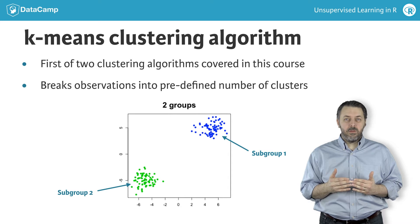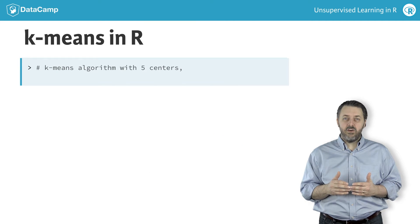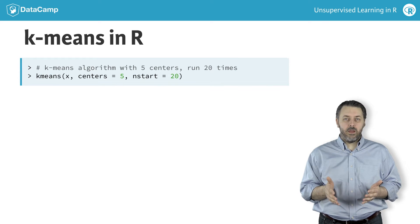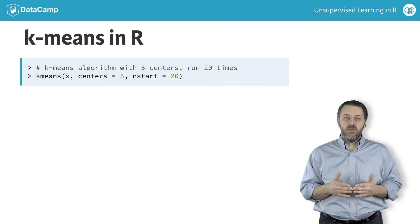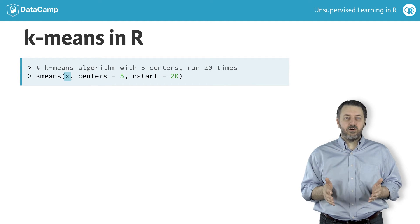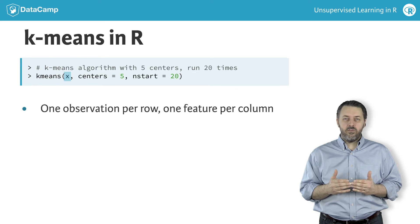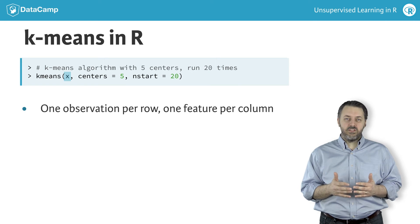K-means in R comes with the base R install. Invoking K-means in R is simply a function call to the K-means function, typically with three parameters. The first parameter is the data, represented as X here. In K-means, like many machine learning algorithms, the data is structured in a matrix with one observation per row and one feature in each column of the matrix.